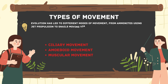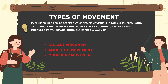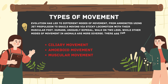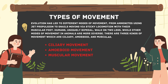Snails move via sticky locomotion with their muscular foot. Humans are uniquely bipedal, walking on two legs, while other modes of movement in animals are more diverse. There are three kinds of movement: ciliary, amoeboid, and muscular.